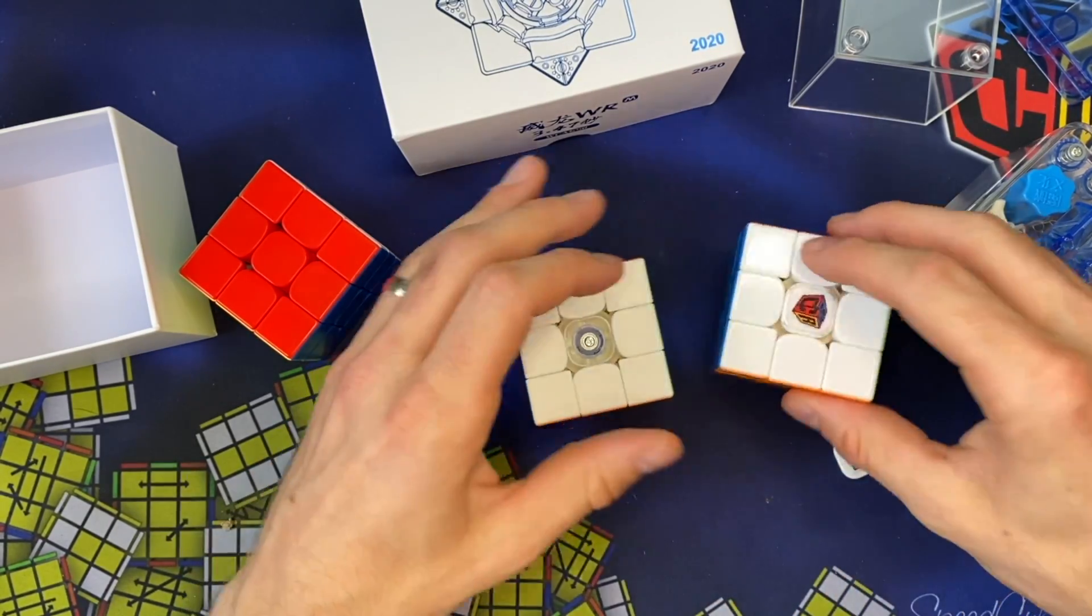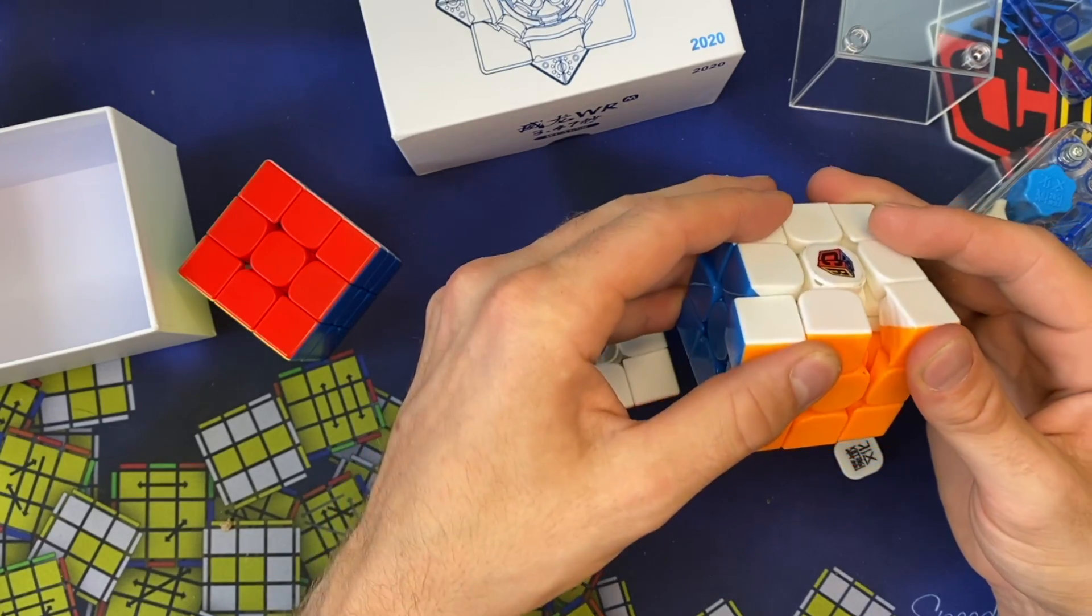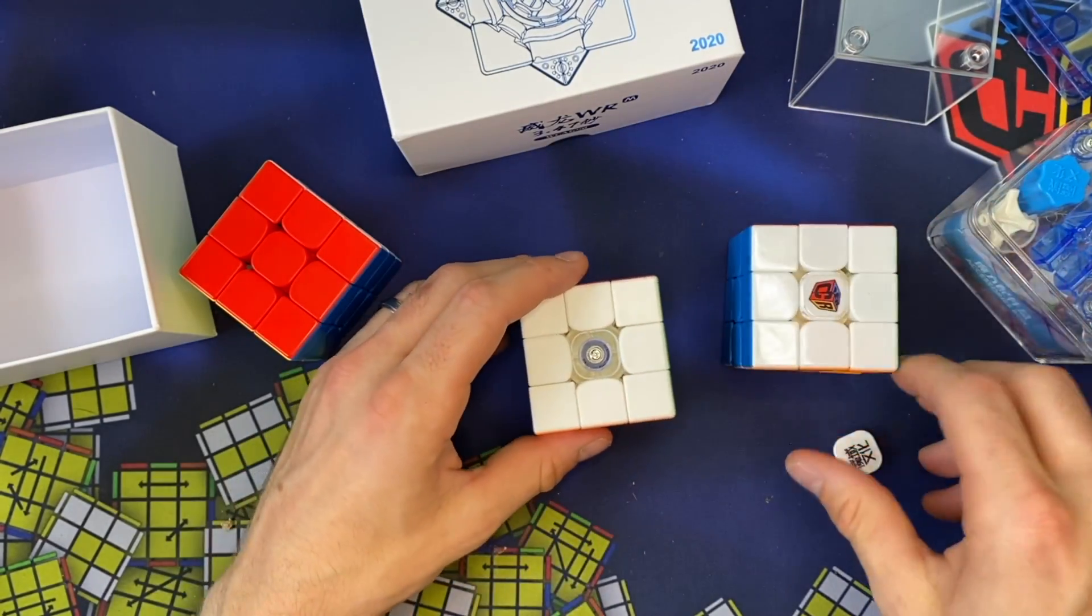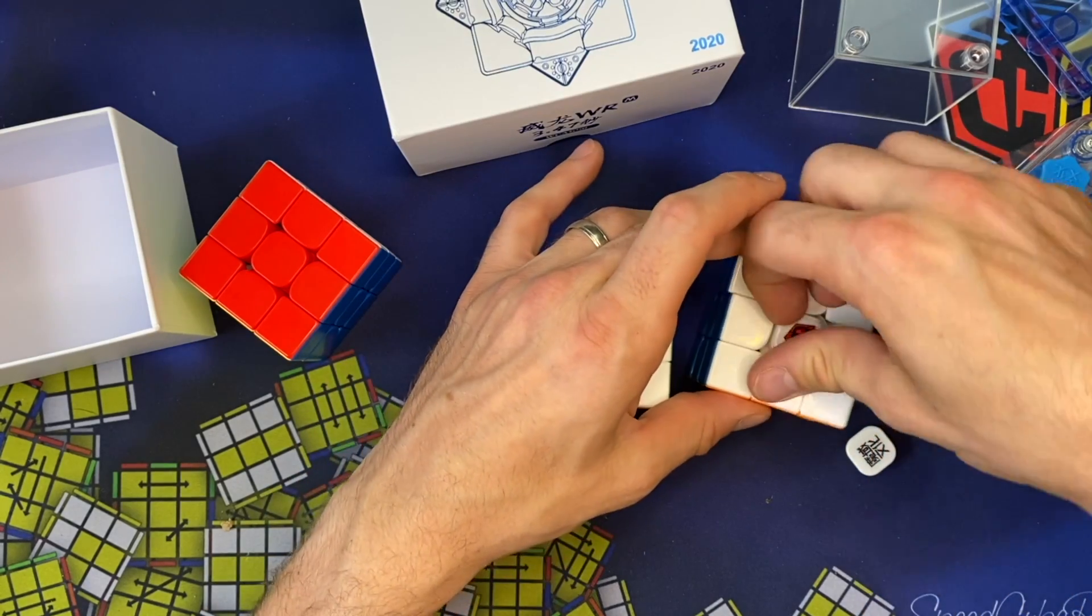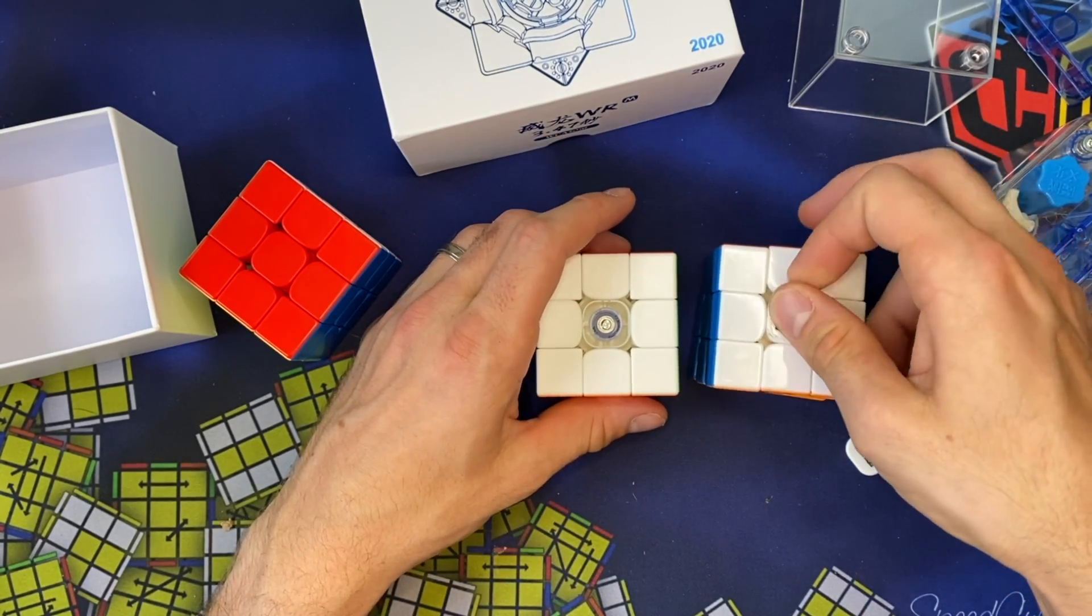And it's primary internals, which, those had the stock's primary, but not the centers. Same dual tensioning system, though, that we see on here and in the GTS3.